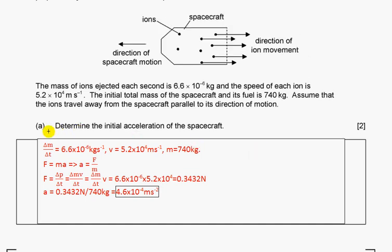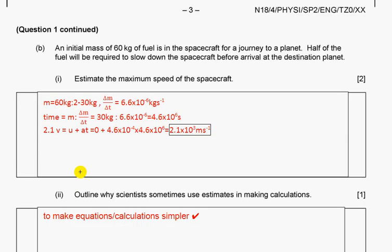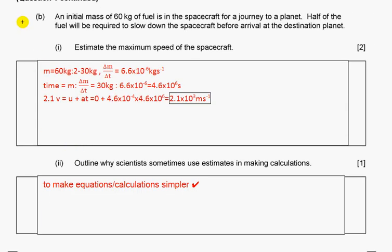First, we're given information: mass per second ejected, velocity, and mass of rocket with fuel. Force equals mass times acceleration, so acceleration equals force over mass. Force equals rate of change of momentum. Here, rate of change of momentum turns into the flow of mass multiplied by velocity. We'll find the force and divide by mass of rocket and fuel to get the initial acceleration.